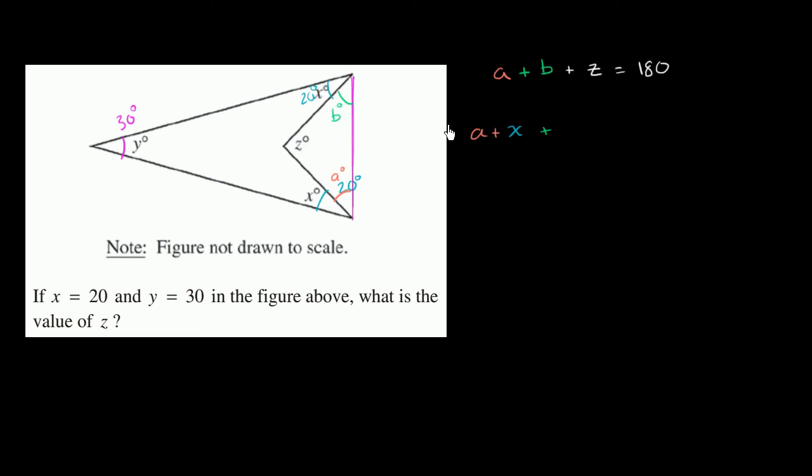Actually, instead of writing x, let me write 20, because we know x is 20. So a plus 20 plus b plus b plus 20. This whole angle right there, and then you add that to y, which is 30, so plus 30.